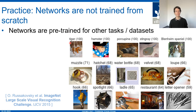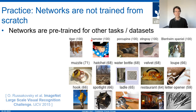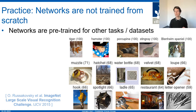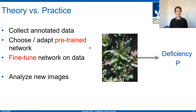ImageNet has a little more than one million images, and each image is annotated by one label — for example, tiger or hamster. For pre-training, you train a network to classify each image based on 1,000 labels. Coming back to crop production, we start with this pre-trained model and then continue training it on our specific dataset.